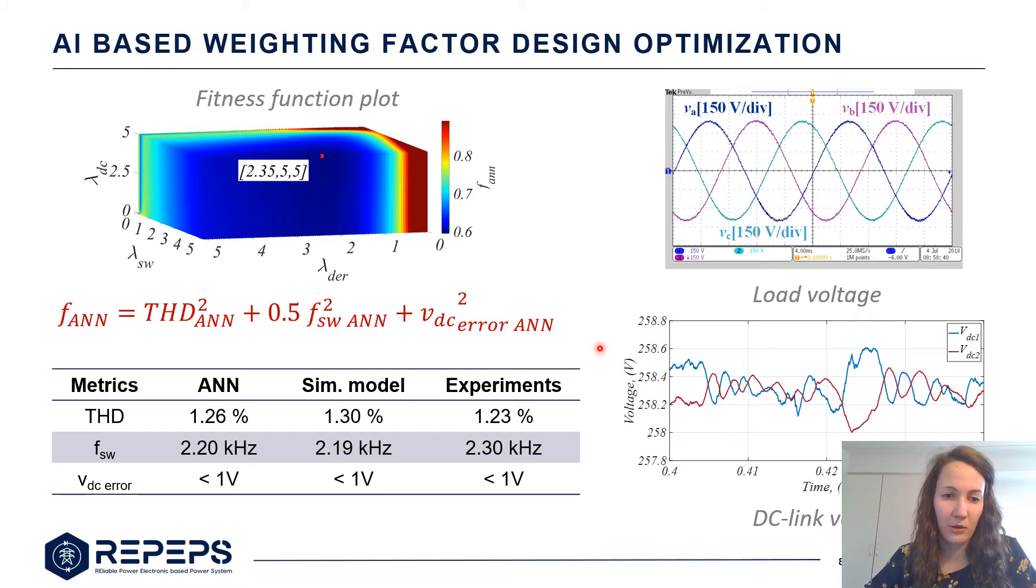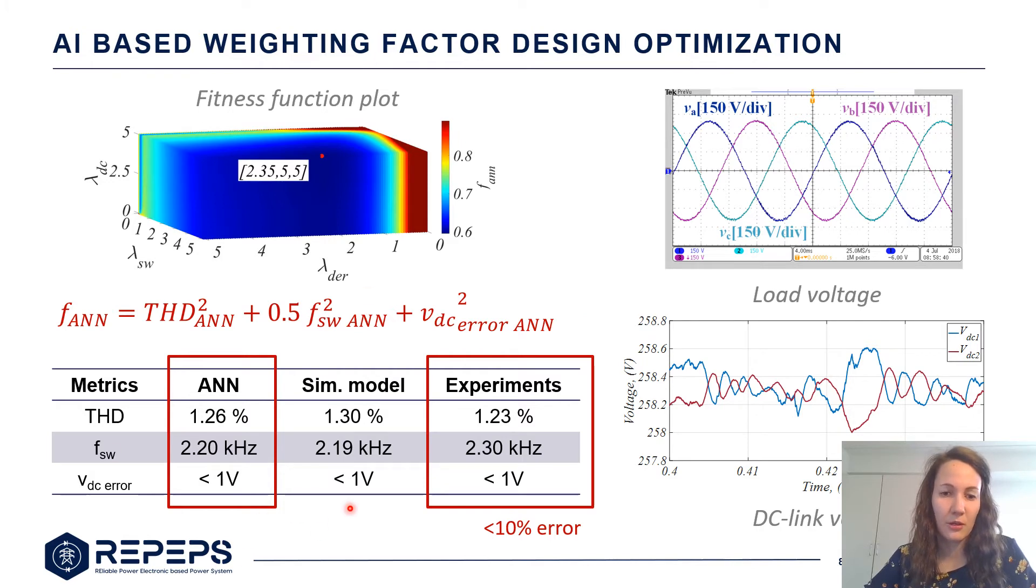What we can do now is to compare if the predicted metrics by ANN match the simulation model and the experiments. You can see that the difference in both experimental and simulation is quite low so we have quite good accuracy of our neural network.